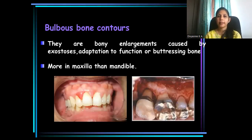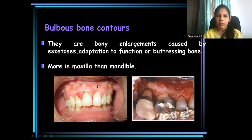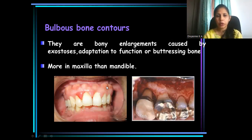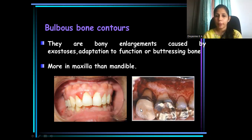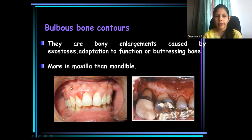Then bulbous bony condyles — these are bony enlargements, either due to exostosis or due to trauma from occlusion, that is buttressing bone formation. The bone formation here occurs in compensation for the bone destruction occurring in trauma from occlusion, and this is a classic example of peripheral buttressing bone formation.